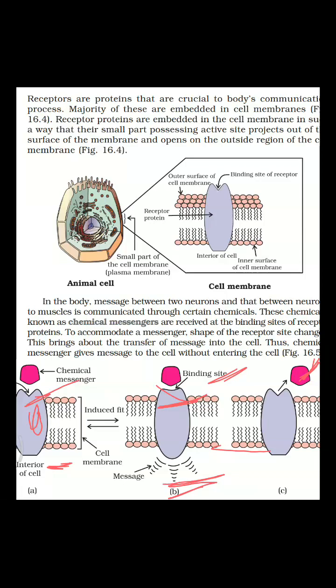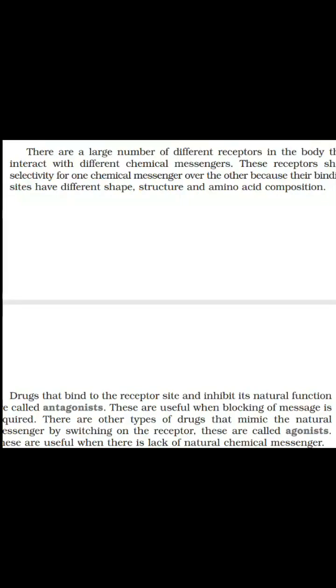After the message is transferred and the messengers leave the surface, the active site regains its original shape. Thus, the messenger delivers the message through receptor proteins without entering into the cell. The chemical messengers leave the binding site, and the receptor proteins then acquire their original shape again.